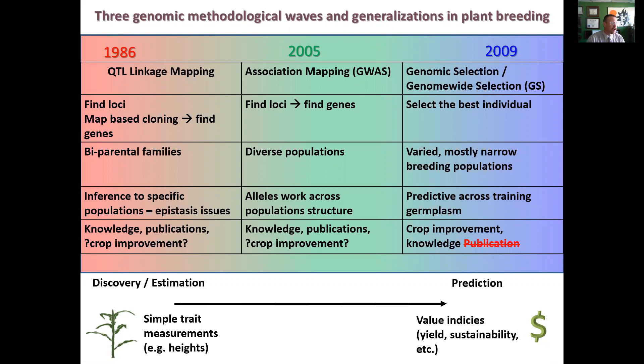Just to remind you, if you watched the first part, there have really been three major methodological waves and generalizations to be made in molecular plant breeding. We talked last time about QTL mapping; now we're talking about genome-wide association studies, which have been going on since about 2005. The background has really been use in humans and species where you can't create bi-parental type families. In this case, we can use diverse populations that were already created, but that comes with more statistical problems.